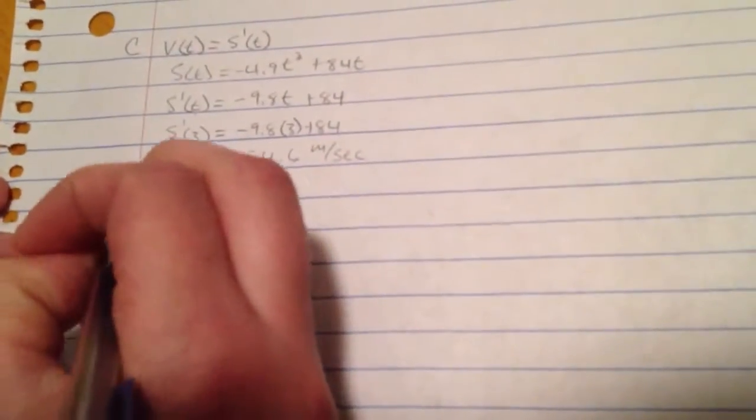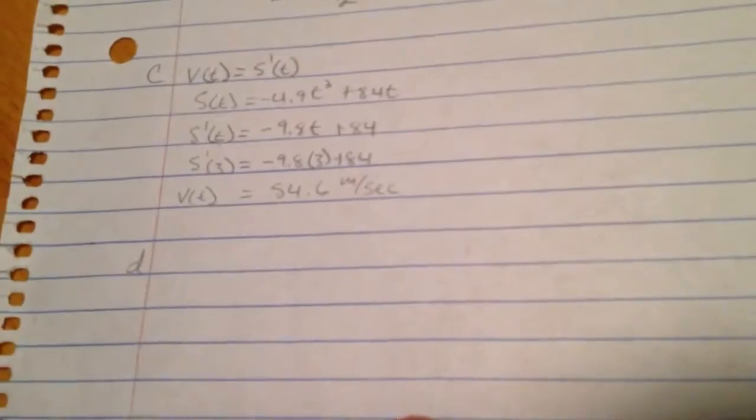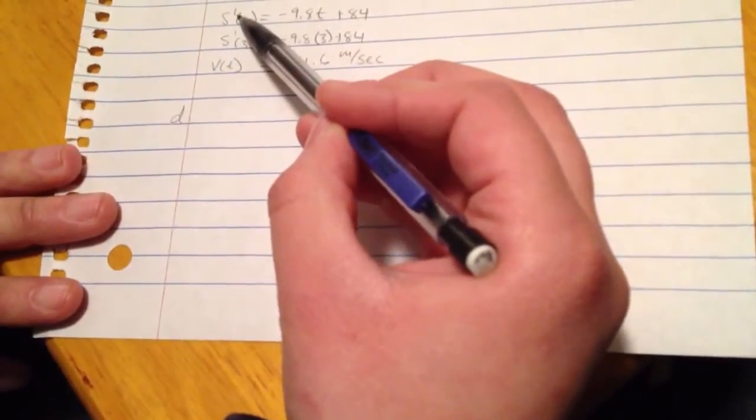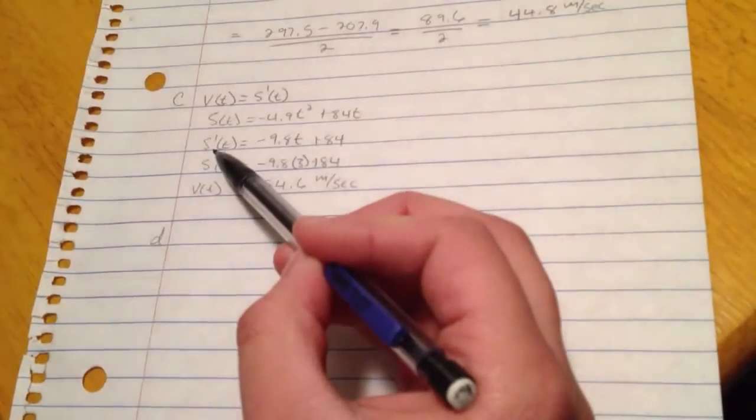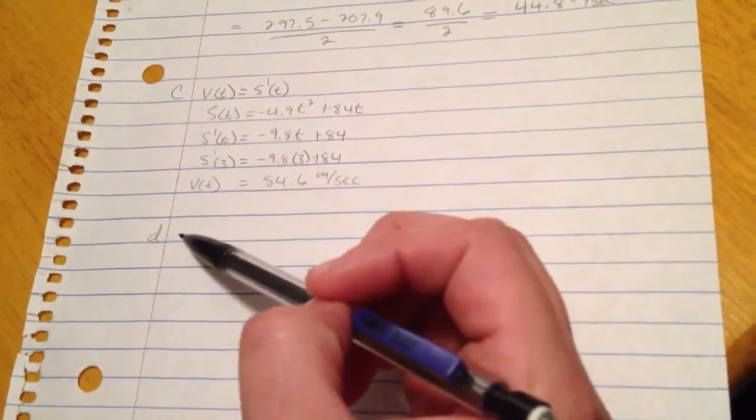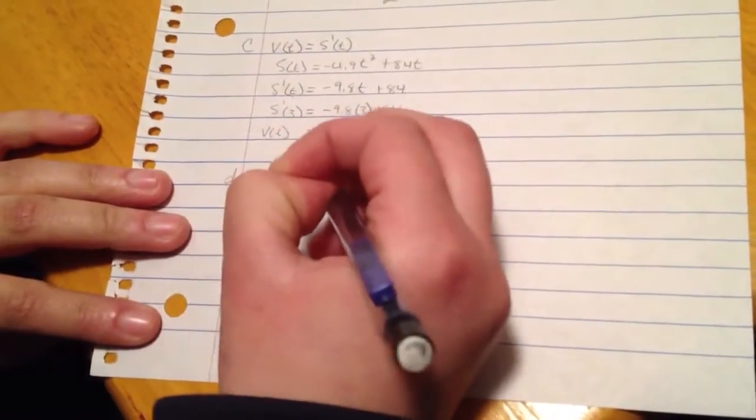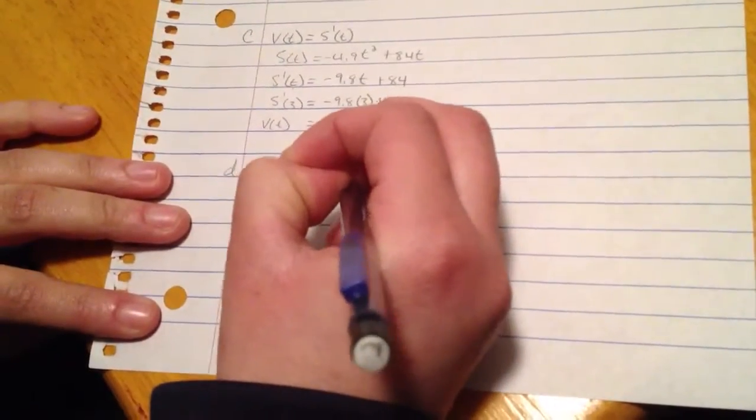And then the last part of the question tells us to find the acceleration of the projectile at 5 seconds. Now what we need to remember is that while velocity is simply the derivative of s(t), acceleration is the second derivative of s(t). So a(t) is equal to s double prime of t.